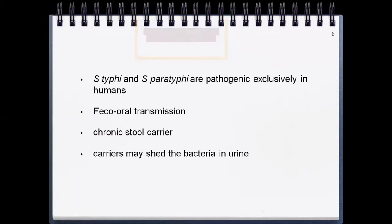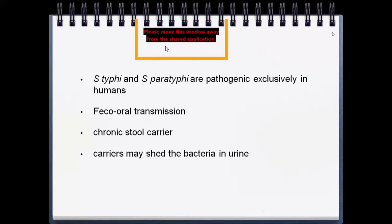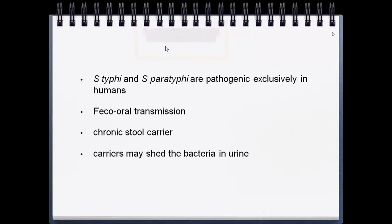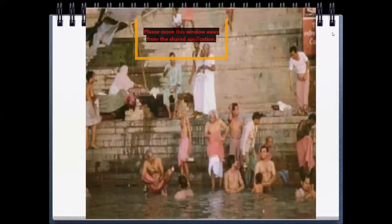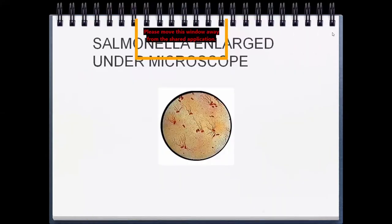Salmonella Typhi and Paratyphi are pathogenic exclusively in humans. Fecal-oral transmission is the mode of transmission — when we eat contaminated food containing feces of a person carrying Salmonella Typhi. Some people can be chronic stool carriers, and carriers may shed bacteria even in urine. Under microscope, Salmonella appears as flagellated bacteria.